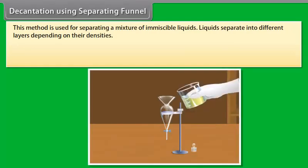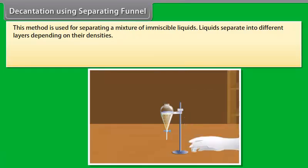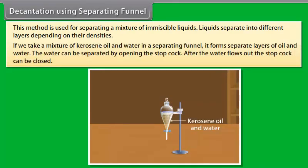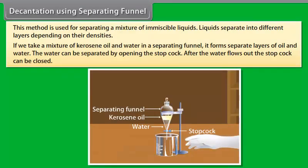Decantation using a separating funnel. This method is used for separating a mixture of immiscible liquids. Liquids separate into different layers depending on their densities. For example, if we take a mixture of kerosene oil and water in a separating funnel, it forms separate layers of oil and water. The water can be separated by opening the stopcock, and after the water flows out, the stopcock can be closed.